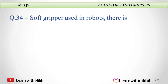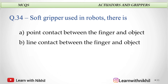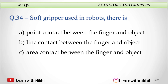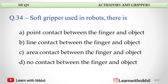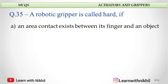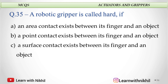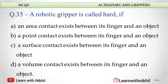Soft gripper used in robots — what type of contact exists? A. Point contact between finger and object, B. Line contact between finger and object, C. Area contact between finger and object, or D. No contact? The answer is area contact between finger and object. A robotic gripper is called hard if: A. Area contact exists, B. Point contact between finger and object, C. Surface contact, or D. Volume contact? For a hard gripper, it is a point contact that exists between its finger and object.